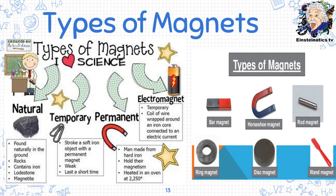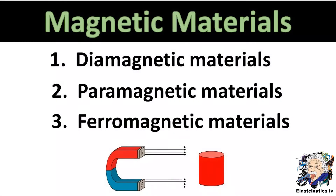Magnets can also be divided by shape: bar magnet, horseshoe magnet, rod magnet, ring magnet, disc magnet, and wand magnet. There are also three types of magnetic materials: diamagnetic, paramagnetic, and ferromagnetic materials.